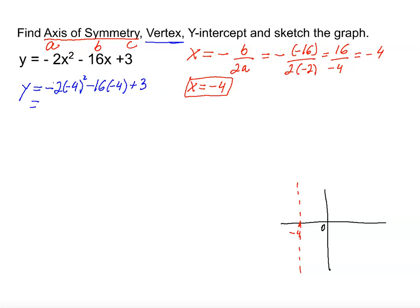So we have negative 2, negative 4 squared minus 16 times negative 4 plus 3. Now we're going to evaluate. Negative 2 times negative 4 squared is positive 16. And now we have negative 16 times negative 4 is plus 64 plus 3.